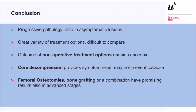In conclusion, osteonecrosis of the femoral head is a progressive pathology even in the asymptomatic hip. There is a great variety of treatment options and it's difficult to compare them because the negative predictors differ among patient series. The outcome of non-operative treatment remains uncertain. Core decompression provides good symptom relief but may not prevent collapse. Femoral osteotomies, bone grafting, or a combination have promising results even in advanced stages. Thank you.